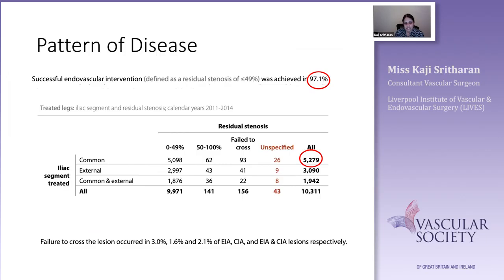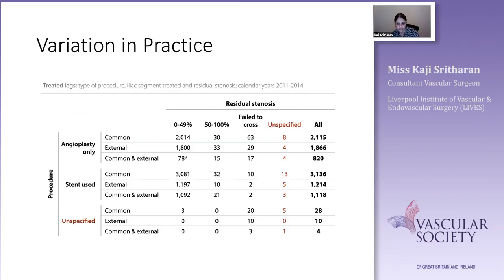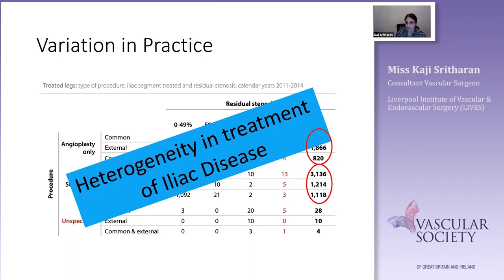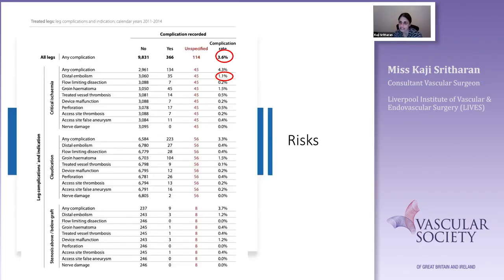The most commonly treated ILIAC segment is the common ILIAC vessel, with a success rate of about 97%. The external ILIAC artery appears to be the most difficult lesion to cross. Looking at angioplasty versus stenting, there is huge variation in practice, and that heterogeneity means there isn't a large amount of data to explain the degree of variation.